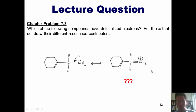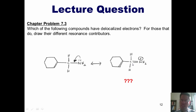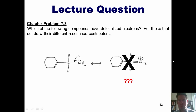You should notice that this carbon right in the middle now has five bonds, or 10 electrons around it. Thus, this is not a legitimate movement of electrons, and this is not a resonance contributor.